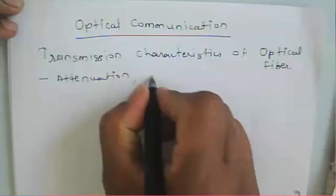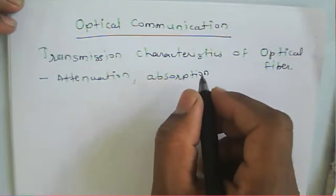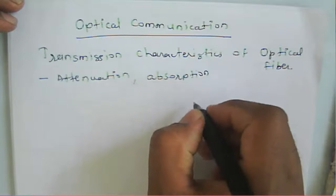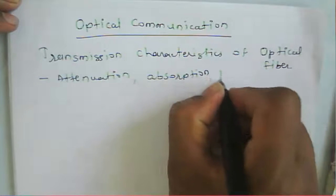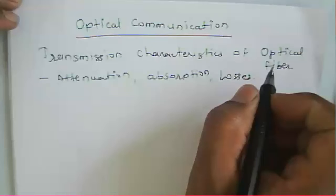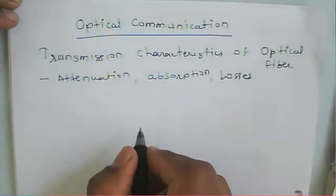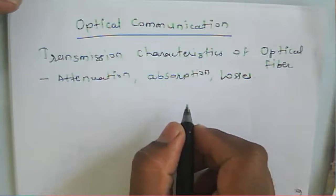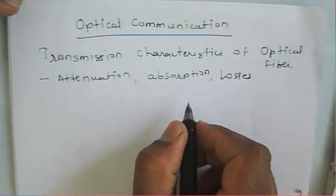After attenuation, we will learn about absorption — that is, material absorption or losses in a fiber. Then we will learn about the losses in a given particular fiber, which can be because of linear and non-linear scattering loss, and also losses due to bending of the fiber, including micro bending and macro bending.